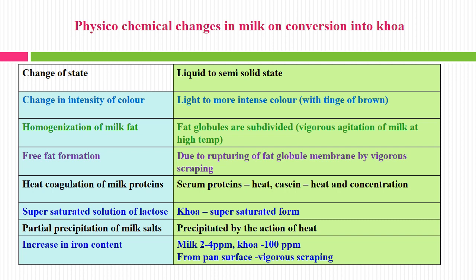There is heat coagulation of milk proteins: serum proteins due to heat and casein due to heat and concentration both get coagulated. Then supersaturation of lactose — the concentration becomes very high, supersaturated, due to the removal of almost 80% of water. Then partial precipitation of milk salts, where some salts in solution form get precipitated due to this dehydration and heating. Finally, there is a large increase in iron content: in milk it is only 2 to 4 ppm, whereas in Khoa it is 100 ppm, mainly due to dehydration and the use of iron vessels with continuous scrapping.